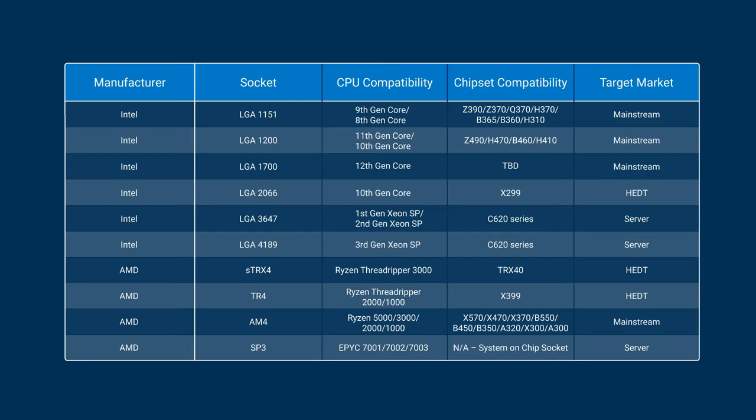When looking at CPU sockets for industrial computers, both Intel and AMD utilize a range of different processor sockets to support their various CPU releases. Oftentimes, the decision regarding which type of processor, socket, and chipset combination is right for you comes down to the intended use of the processor and the systems that will be designed around it. Here's a breakdown of many of the industrial CPU sockets from both Intel and AMD that are either currently available or will be available soon, including the associated CPU generation, chipset compatibility, and target market for each.